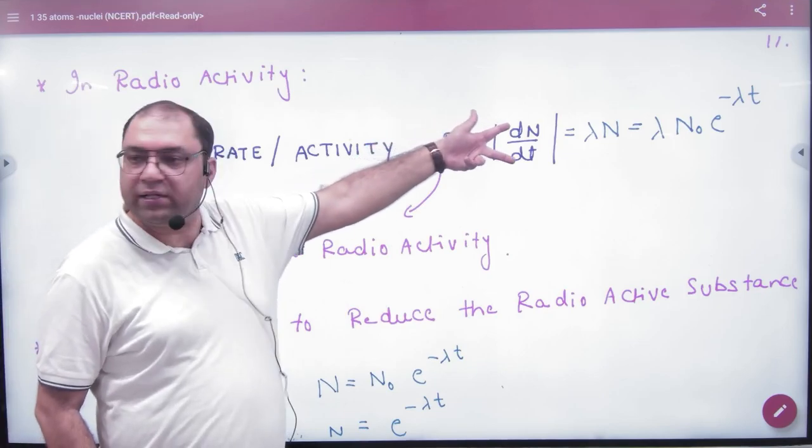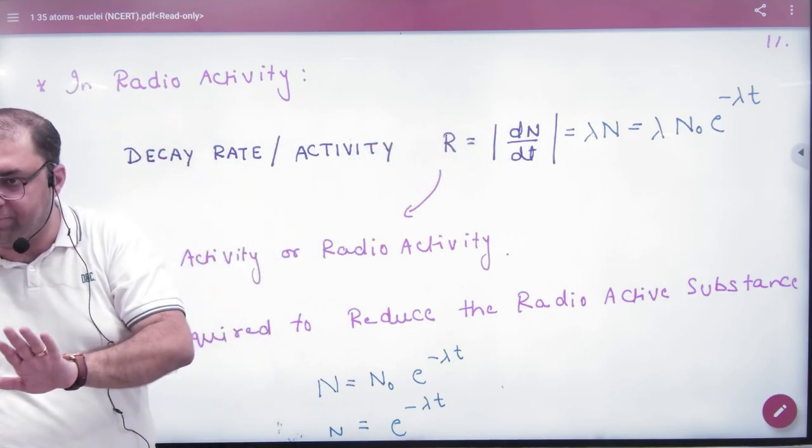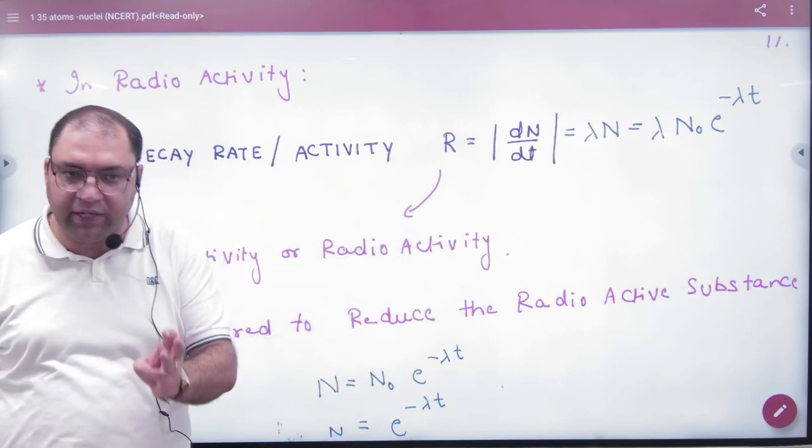The decay rate is called dN by dt. The dN atoms are removed in dt time. We represent it from R for radioactivity or decay rate.